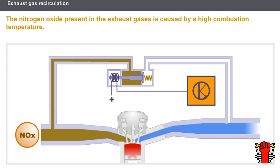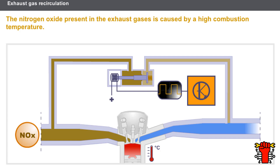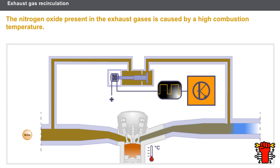Nitrogen oxides present in the exhaust gases are caused by a high combustion temperature. The EGR valve is controlled by a modulated pulse current (RCO). By sending exhaust gases which have already been burnt back into the inlet manifold, the quantity of oxygen involved in combustion is reduced, and the combustion temperature is therefore lower.